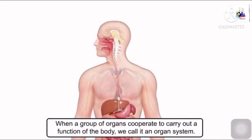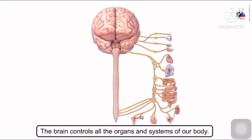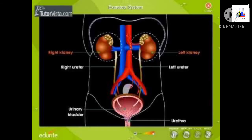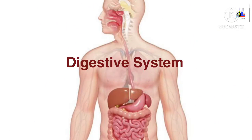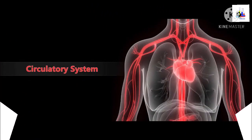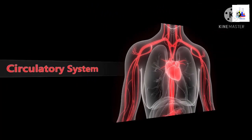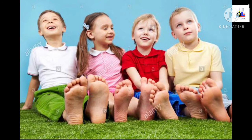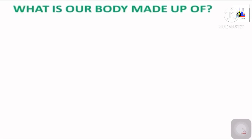Next is organ system. When a group of organs cooperate to carry out a function of the body, we call it an organ system. The brain controls all the organs and systems of our body. Some examples of organ systems are the excretory system, digestive system, and circulatory system. These organ systems join together to form an organism like us.